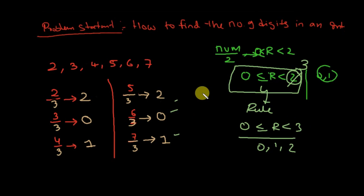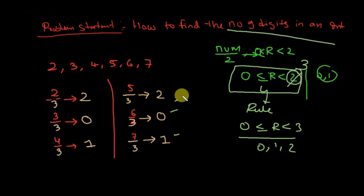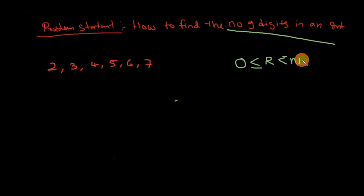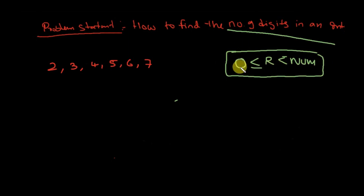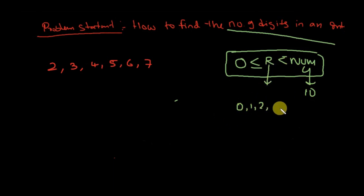I want to give an intuition about how this works. The remainder is always between 0 and less than the divisor. Now, if the divisor is 10, what are the possible remainder values? We'll get 0, 1, 2, 3, 4, 5, 6, 7, 8, or 9.